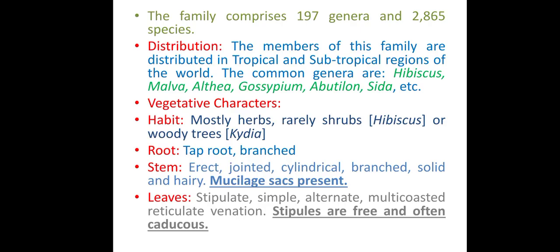Malvaceae family: the family comprises 197 genera and 2865 species. Members of this family are distributed in the tropical and sub-tropical regions of the old world. Vegetative characters: habit mostly herbs, really soft root, taproot and branched stem.